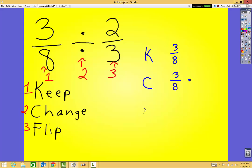And then my last step is FLIP. So the problem is still going to stay the same. I copy everything from above, three-eighths, times, and now I'm going to FLIP. I'm going to take the reciprocal. So my denominator becomes my numerator, and my numerator becomes my denominator.